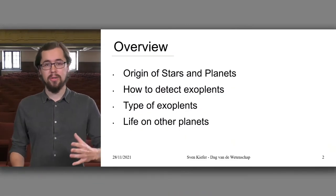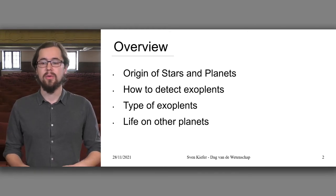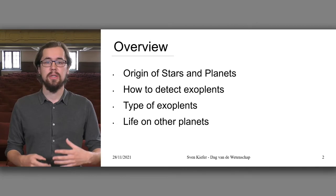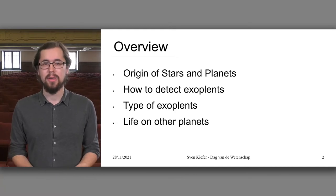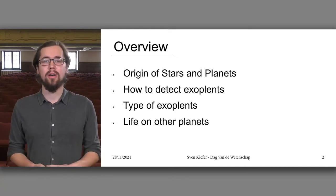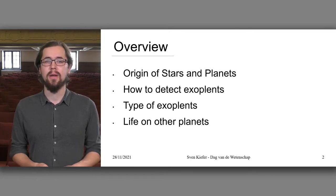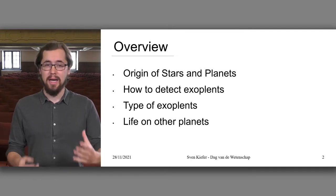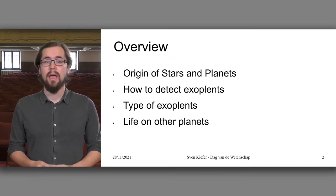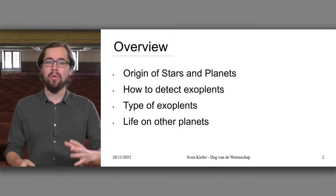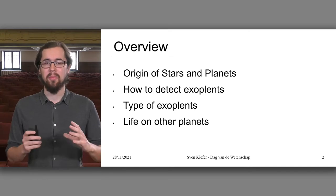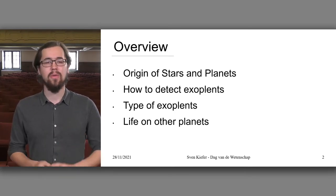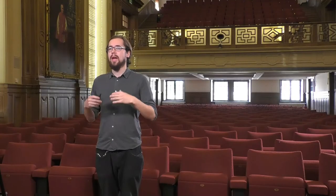I'll give you a quick overview of what we're going to talk about today. First, I will talk about the origin of stars and planets. Then I will show you how we actually detect exoplanets, because as you might have already thought, it is a little harder than just looking through a telescope and seeing them. Then I'll talk about the types of exoplanets we already know of, and lastly I'll give an overview of life on other planets, since that's one of the topics people are most interested in when hearing about exoplanets.